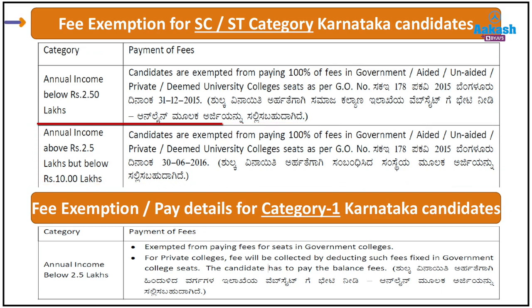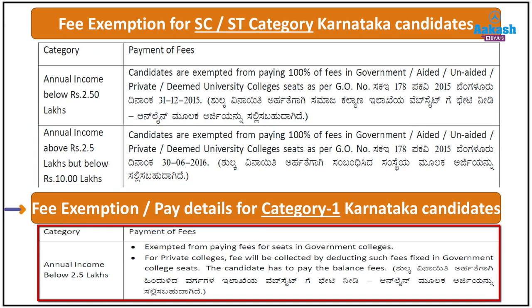For Category 1 Karnataka candidates, if the annual income is below 2.5 lakh, payment of fees is exempted for seats in government colleges. For private college seats, fees will be collected by deducting the fees fixed for government college seats — the candidate has to pay only the balance fees in this case.